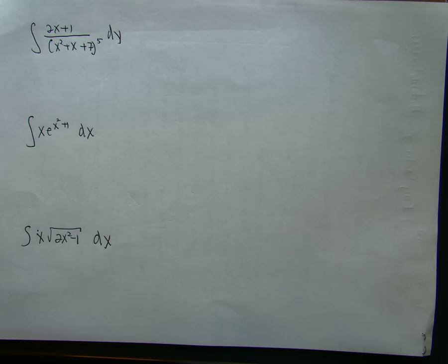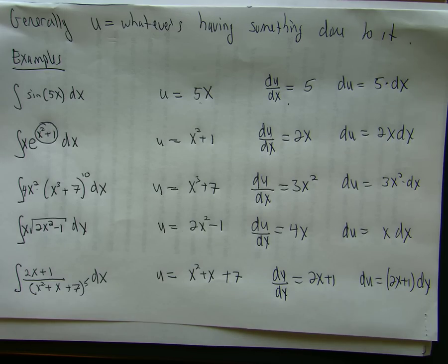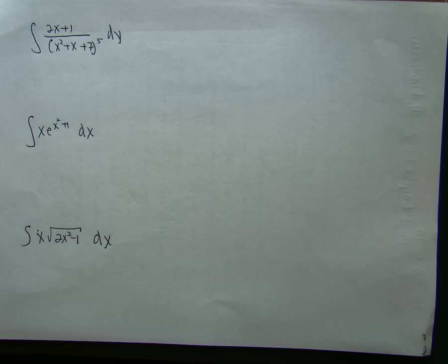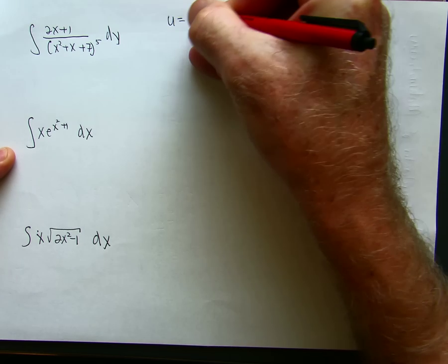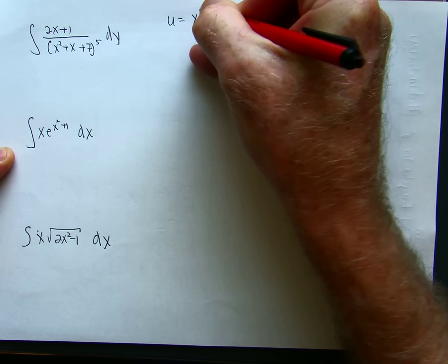I'm going to do the rest of the examples from the first sheet. So, there's 2x plus 1. We already identified u as x squared plus x plus 7.